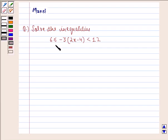6 is less than equal to minus 3 into 2x minus 4 is strictly less than 12. In this question we have to solve the given inequality.